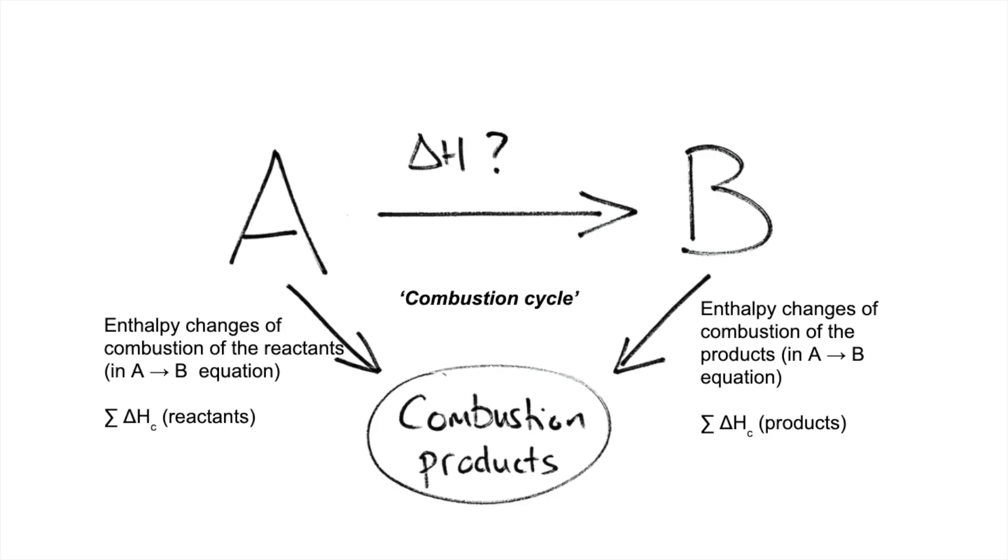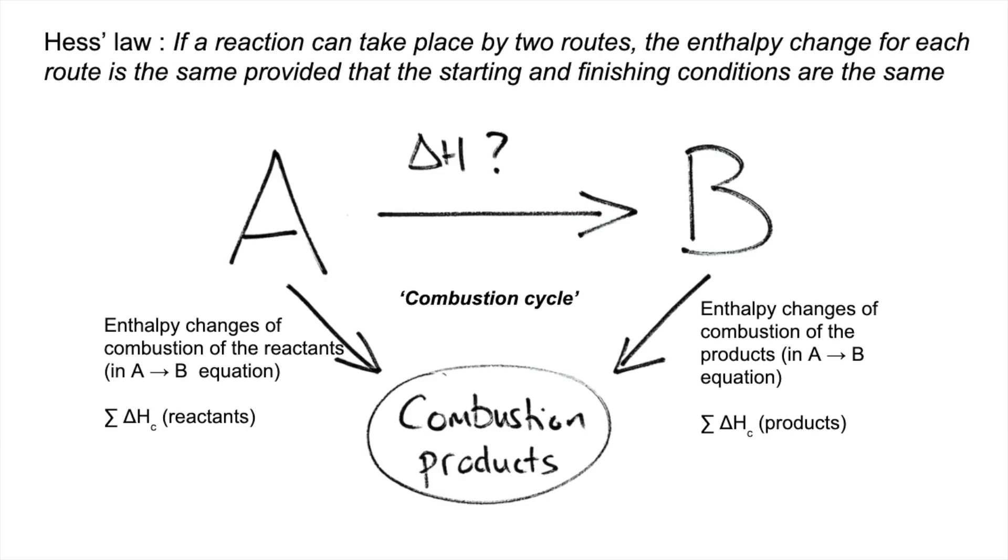If we bring Hess's law into play now, Hess's law states that if a reaction can take place by two routes, the overall enthalpy change for each route is the same provided that the starting and finishing conditions are the same. We've got A to B directly, so that's one route, or we could go this way, the blue route.